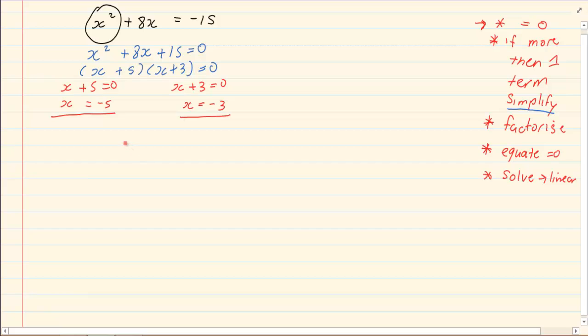Let's do the following example. If I give you x squared is equal to 9, we first need to make it equal to 0.